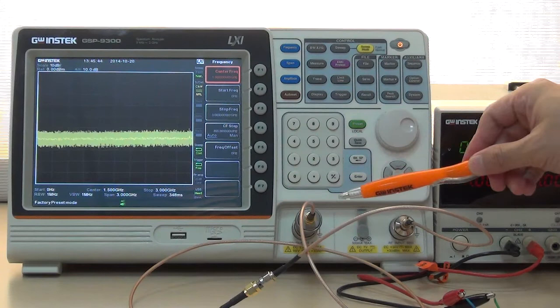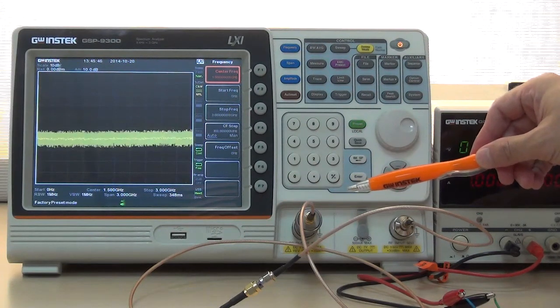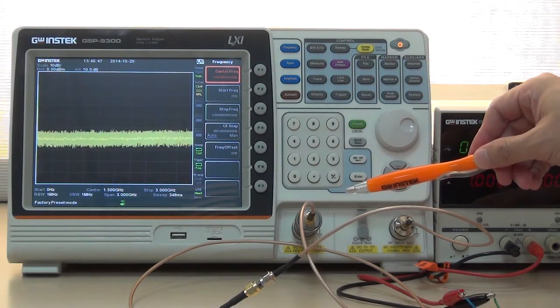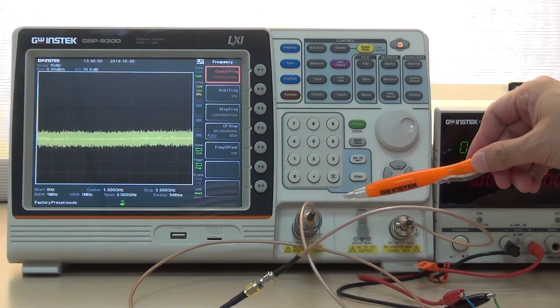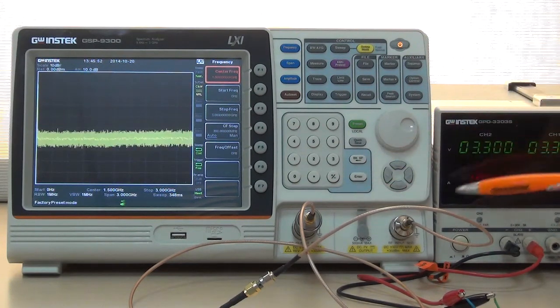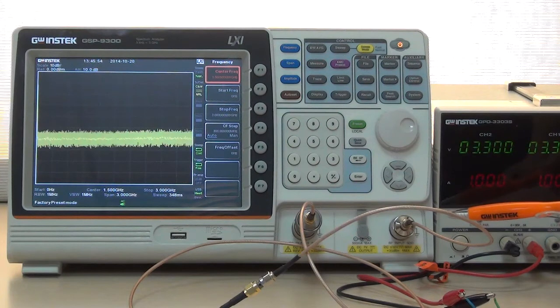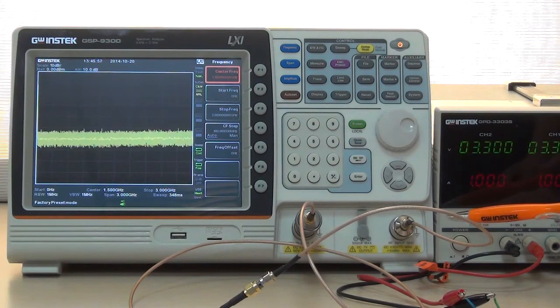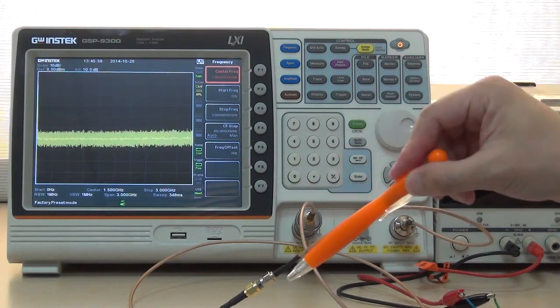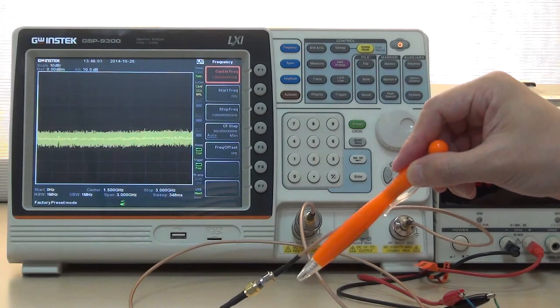First of all, connect 10 dB attenuator and SMA RF cable with tracking generator output. Connect RF input of GSP9300 with SMA RF cable and connect both ends with SMA RF cable.